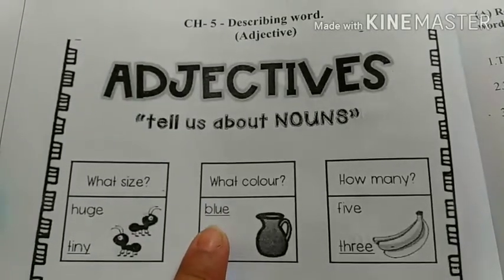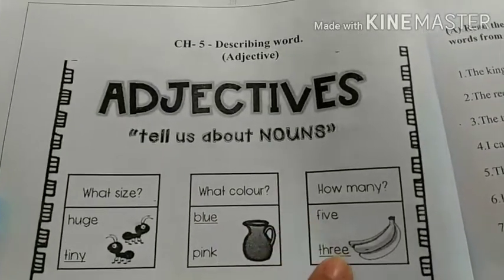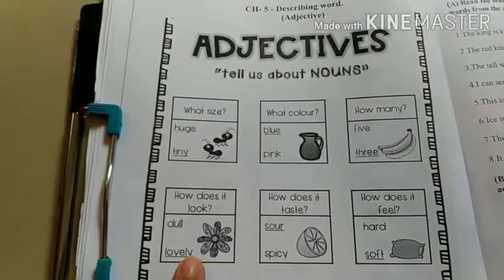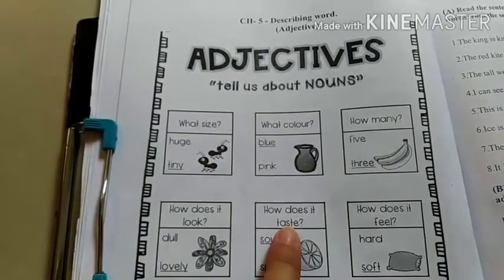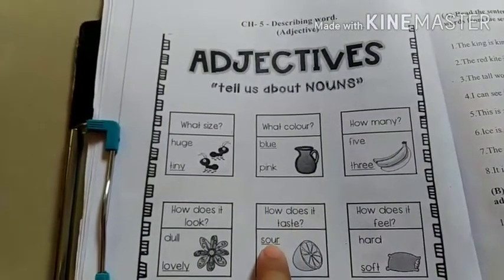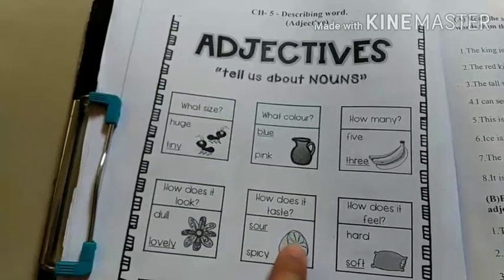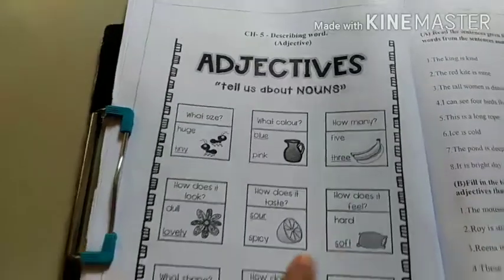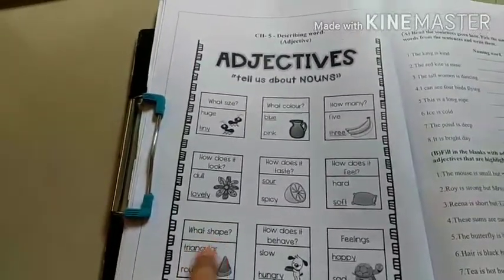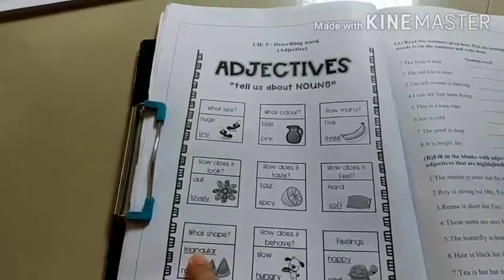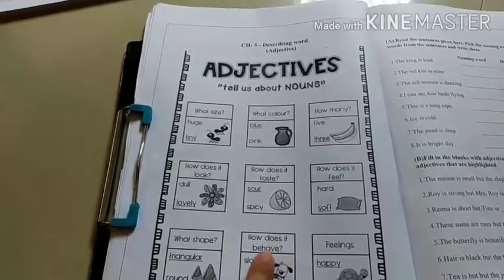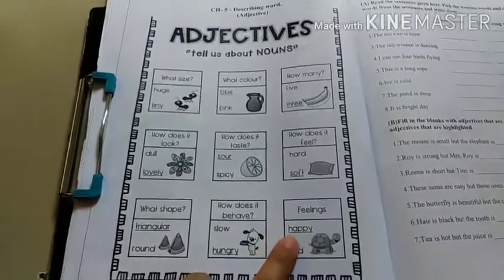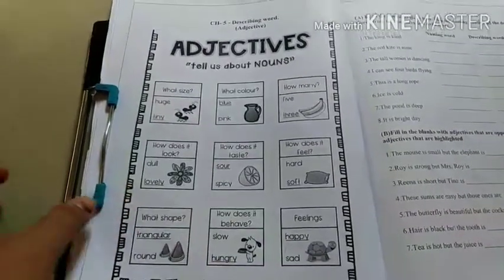What size? What color - blue. How many - three. How does it look - lovely. How does it taste - sour. Lemon tastes sour. How does it feel - soft. What shape - triangular. How does it behave - hungry. Feeling happy.